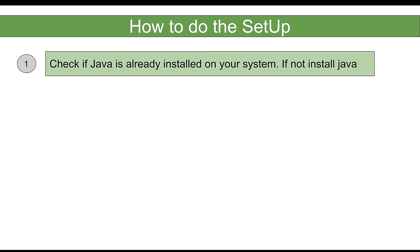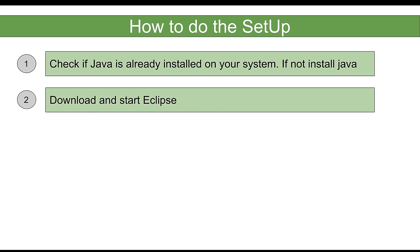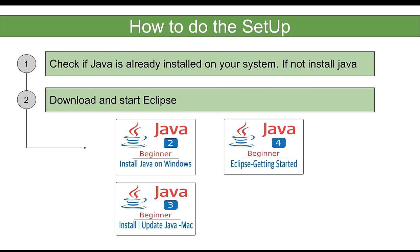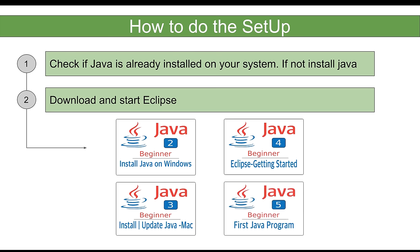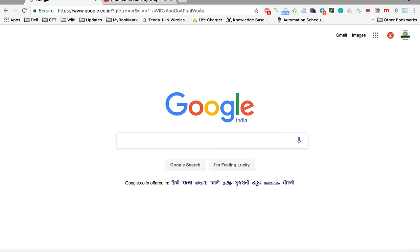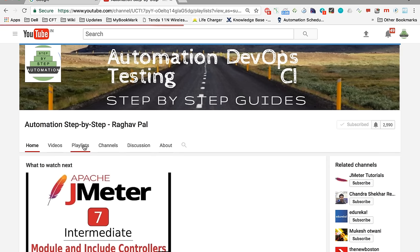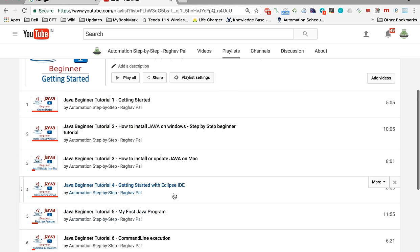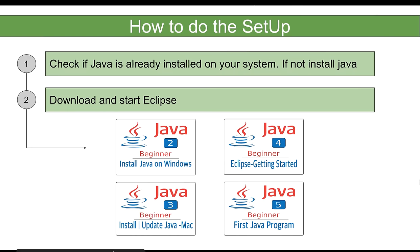The very first step is we have to do the initial setup: check if Java is already installed on your system and install Java if it is not, then download and start Eclipse. I already have separate video sessions recorded for these. You can go to my channel and watch the Java 2 session for installing Java on Windows, the Java 3 session for Mac, the fourth session on getting started with Eclipse, and the fifth session on writing the first Java program. The second and third sessions based on your operating system, and the fourth and fifth, are mandatory for this session.